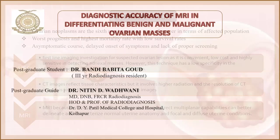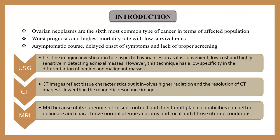Introduction. Ovarian neoplasms are the most common type of cancers in terms of affected population. They have worse prognosis and highest mortality rate with low survival rate, asymptomatic course, delayed onset of symptoms, and lack of proper screening. Ultrasound is the first-line imaging investigation for suspected ovarian lesion as it is convenient, low-cost, and highly sensitive in detecting adnexal masses.